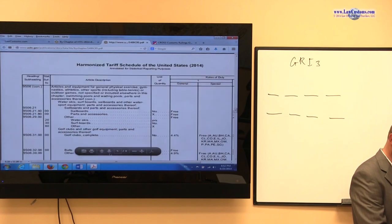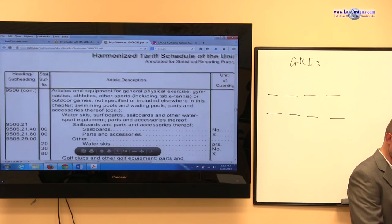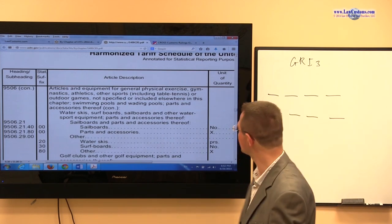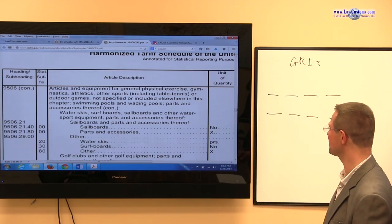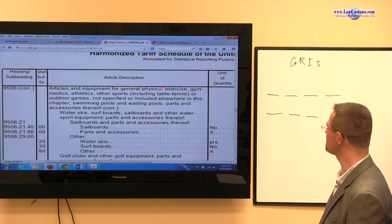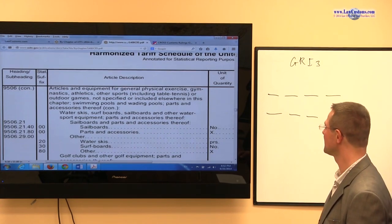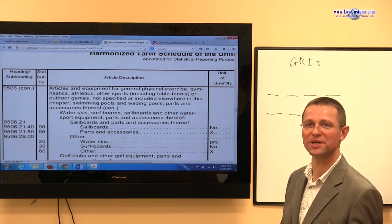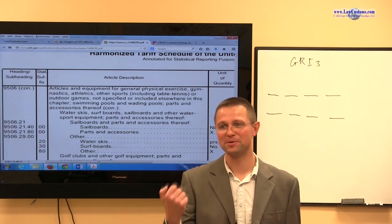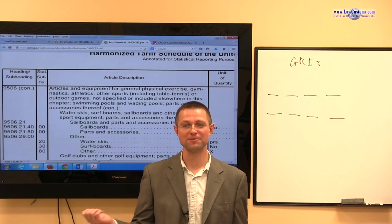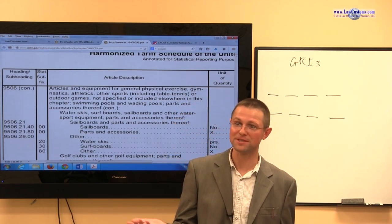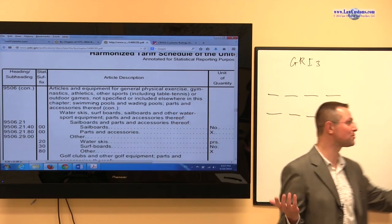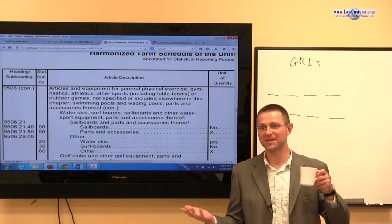And we see that it provides for articles and equipment for general physical exercise, gymnastics, athletics, other sports, outdoor games - baseball is an outdoor game - not specified to include elsewhere in this chapter and parts of those articles. So is it equipment for other sports or outdoor games such as baseball? Is the baseball glove equipment? And if yes, yes, if no, no. Is it possible for the baseball glove to be equipment? I think it's possible.